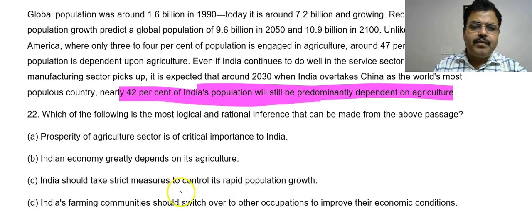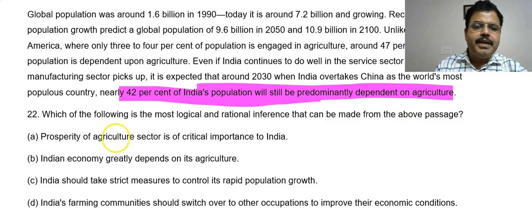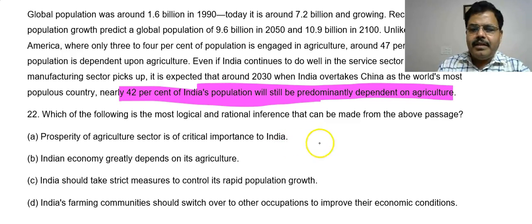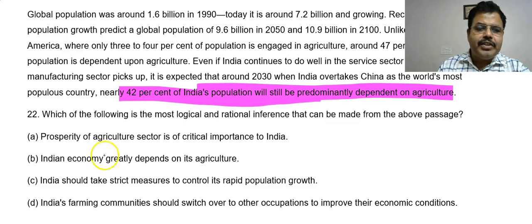The question asks: what is the most logical and rational inference that can be made from the above passage? Option A: prosperity of the agriculture sector is of critical importance to India. This is somehow true, but it is not the most rational inference, because the passage mainly states that most people depend on agriculture currently and will continue to do so in the future.